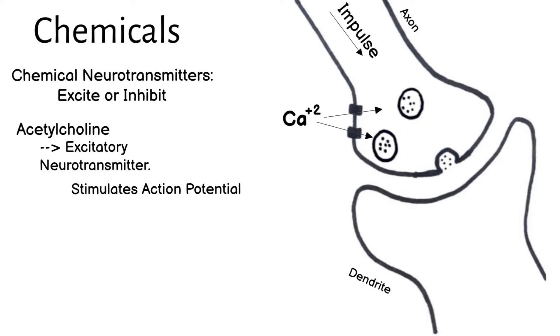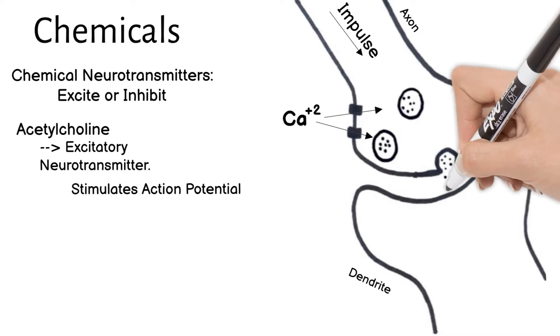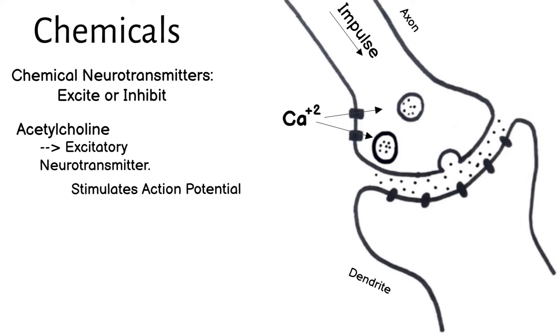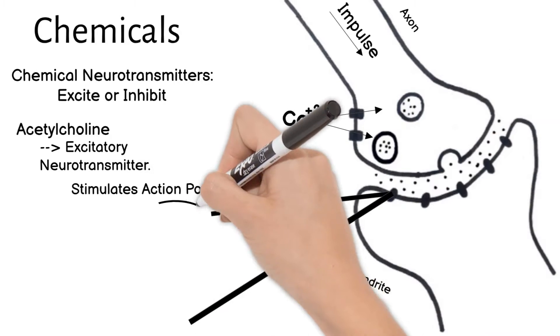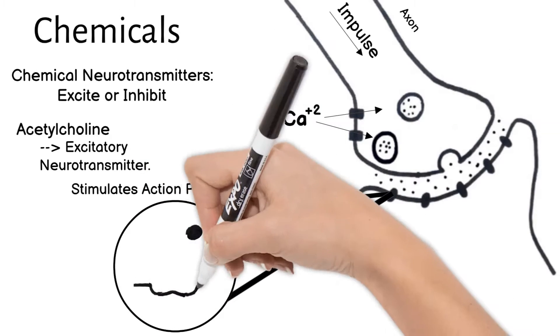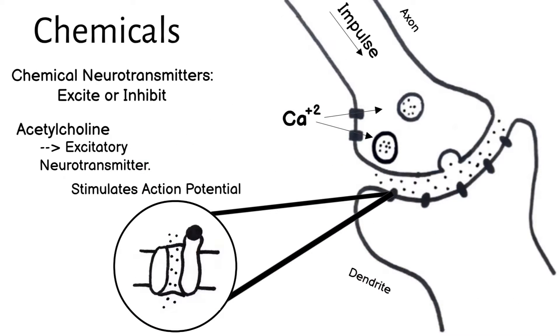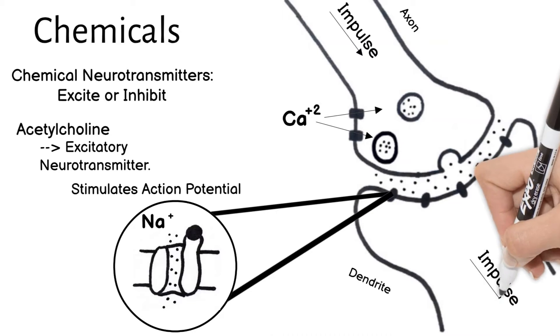In our case, that acetylcholine released diffuses through the gap and binds with a sodium gate. Taking an even closer look, we see that this opens that sodium gate, causing sodium ions to rush into the dendrite of that neuron which, if you remember, will start depolarization, and an impulse will then travel through the neuron.